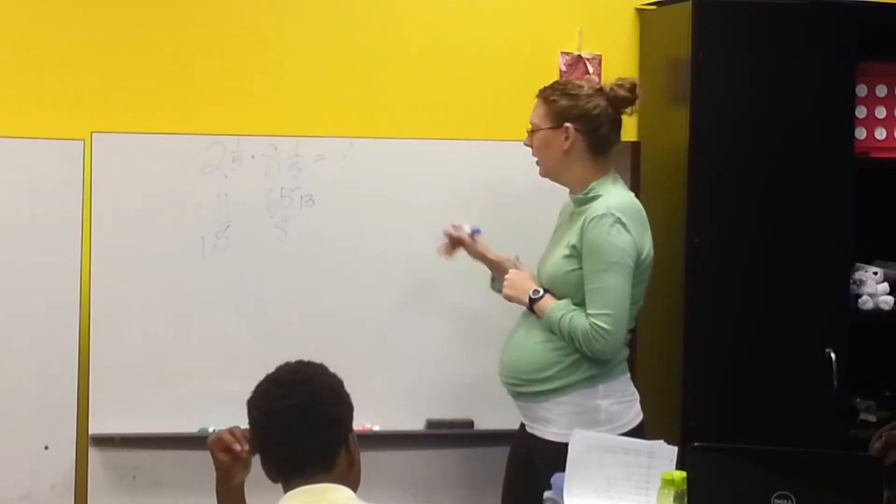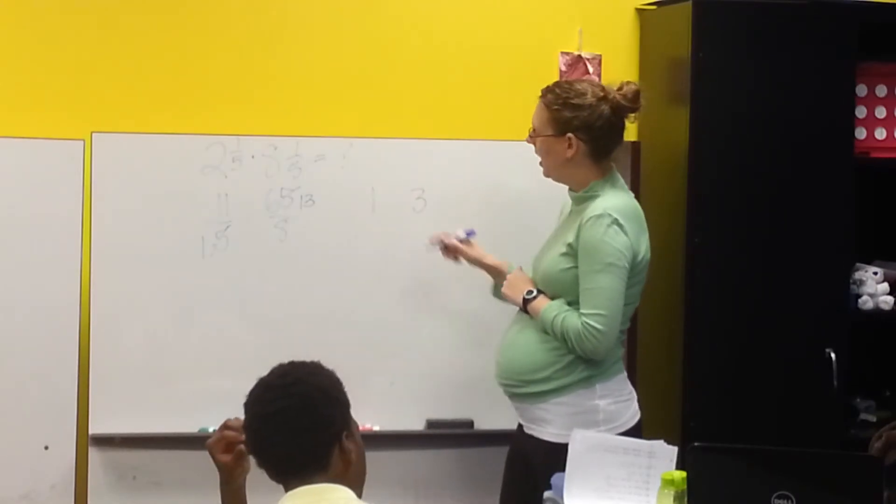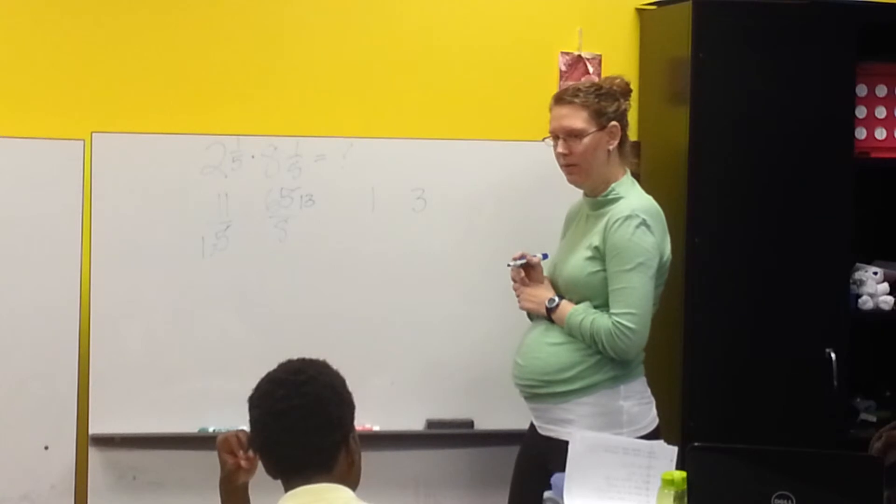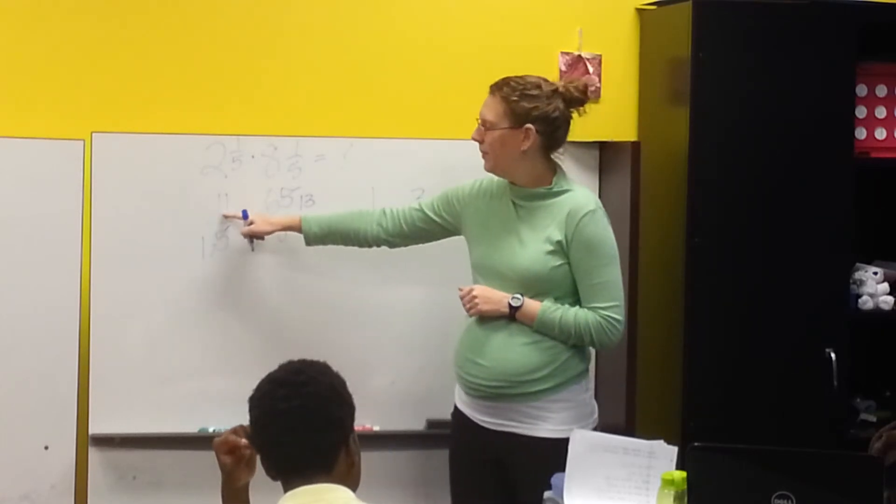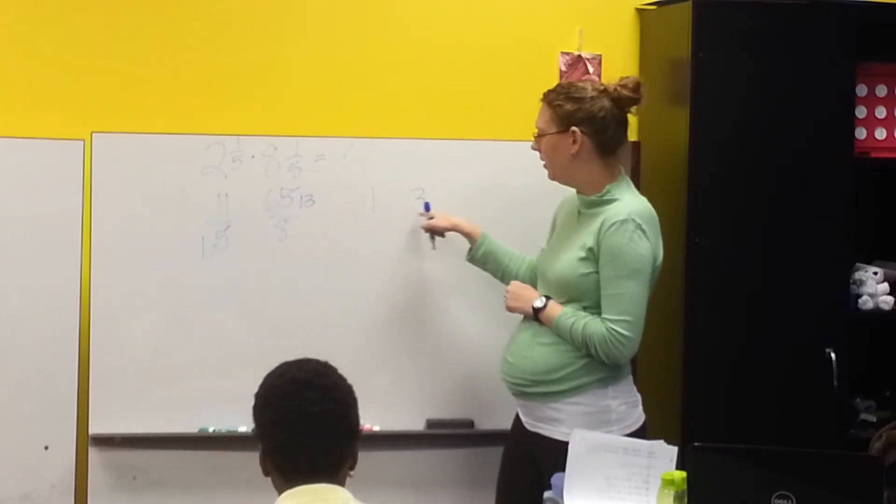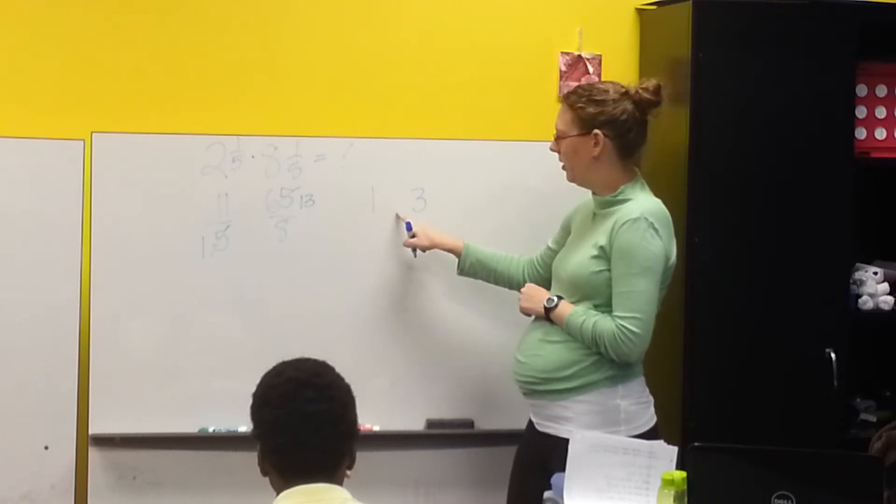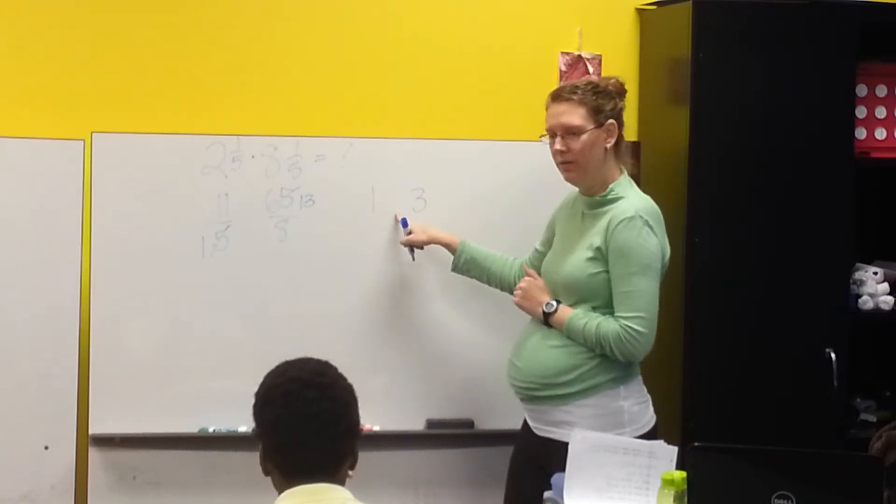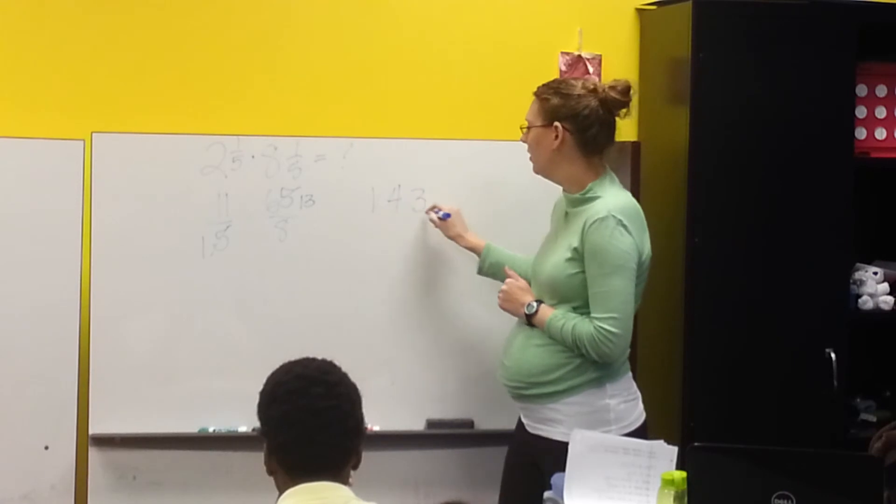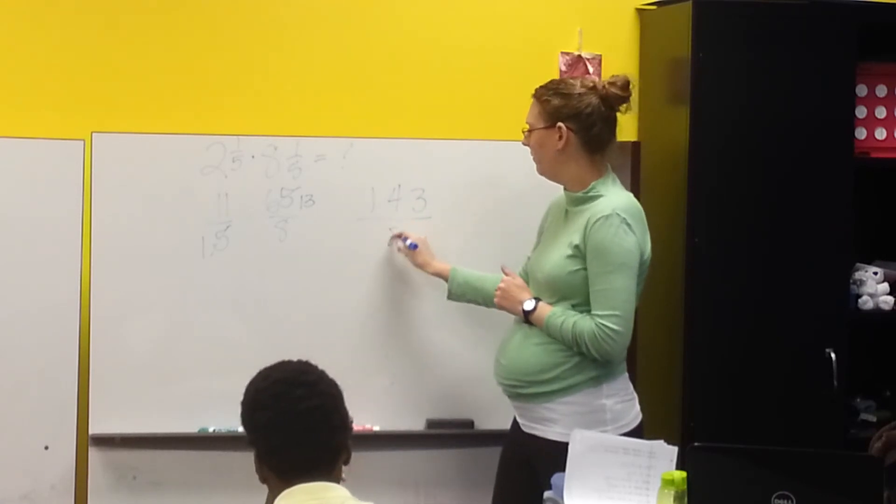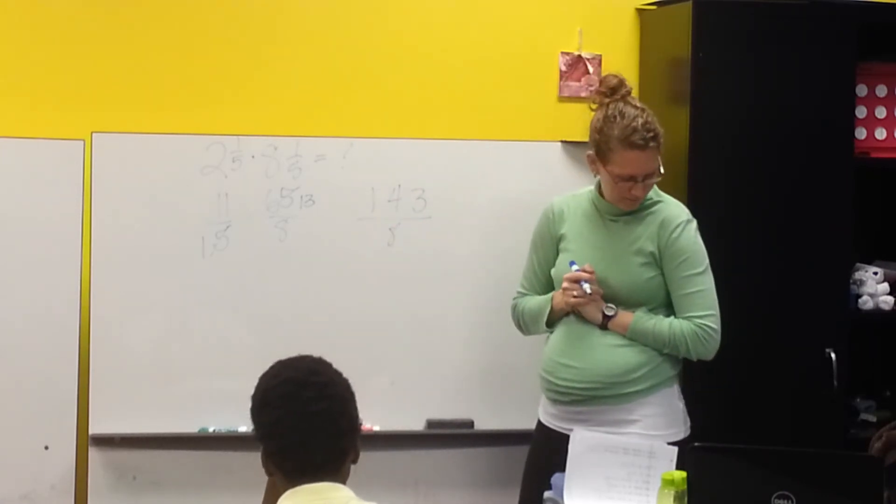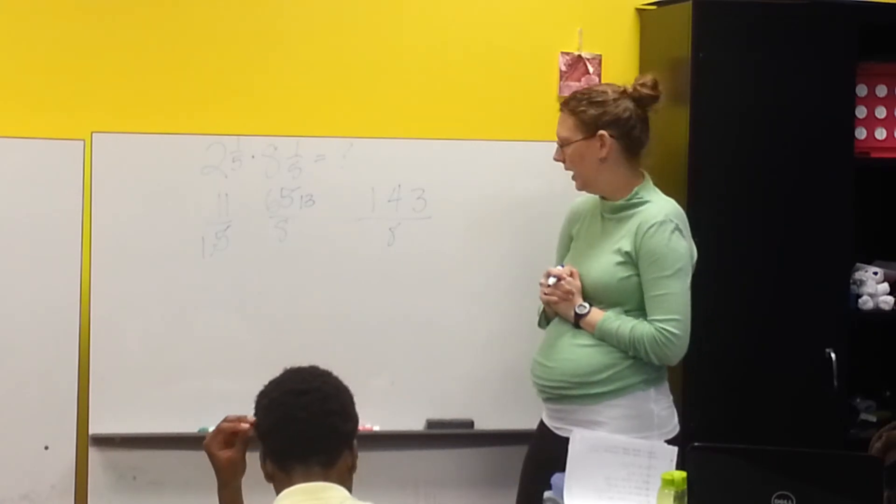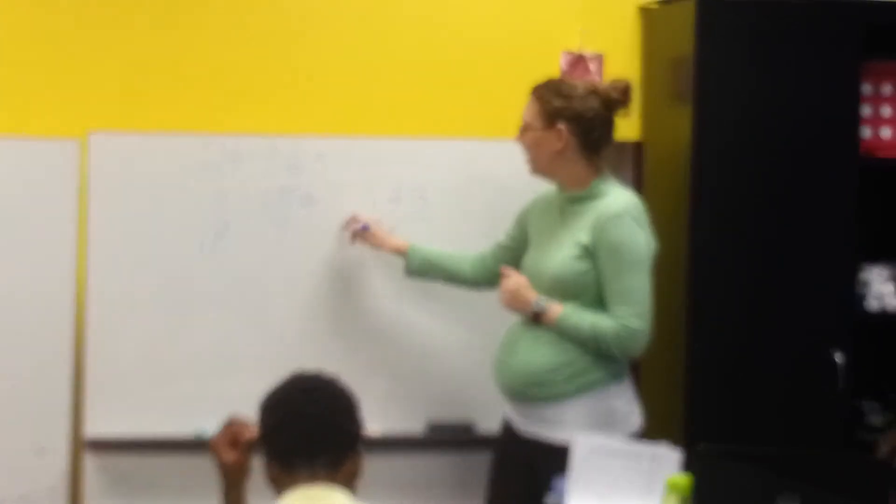Can you do 11 times 13 in your head? Remember the trick? Split them up and add them together. Times 13 means you can split them up and then add them together for the middle number. 143 over 8. Is that your final answer? Yep. And that is correct. Okay? So your question mark is 143 over 8.